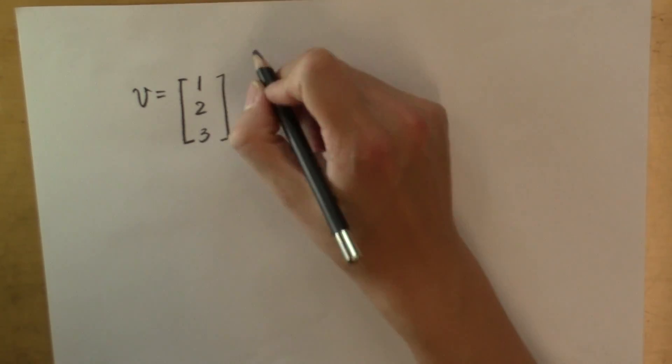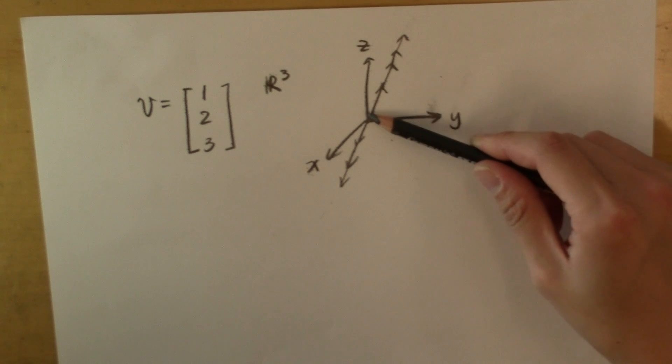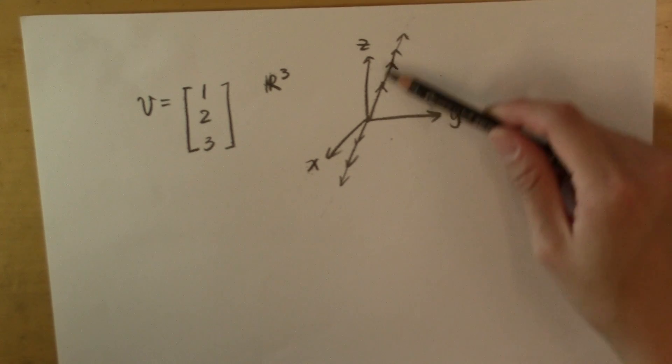And if v is a vector in the three-dimensional Euclidean space, the same thing happens. The span of v contains all the vectors whose endpoints are lining up on the same line.